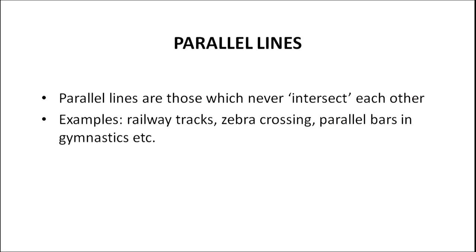Now we will deal with the concept of parallel lines. The lines shown just now are called parallel lines, as such lines never intersect — or in other words, they never cross each other. Examples for parallel lines: you'd have seen parallel lines in the railway tracks, in the zebra crossing, and in the parallel bars of gymnastics.